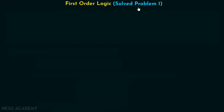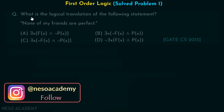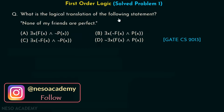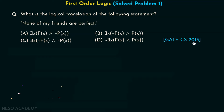Let's discuss and solve problem one on first-order logic. What is the logical translation of the following statement: 'None of my friends are perfect'? These are the options available in front of you. You need to identify which option is the correct option. This question has been asked in GATE CS 2013. I would advise you to pause the video for a while and try to answer this question on your own.